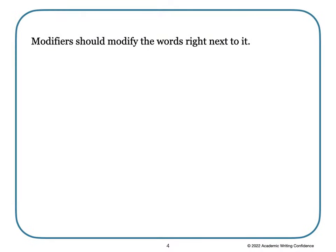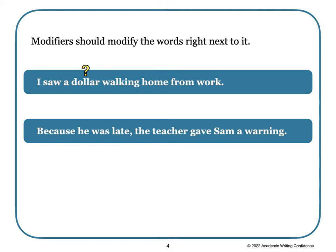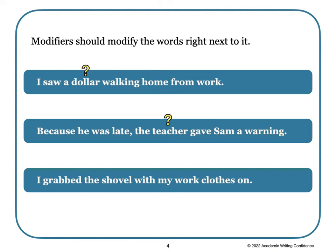So modifiers should modify the words right next to them. Consider: 'I saw a dollar walking home from work' — was the dollar walking home from work? 'Because he was late, the teacher gave Sam a warning' — was the teacher late or was Sam late? 'I grabbed the shovel with my work clothes on' — did the shovel have my work clothes on, or did I? You can see that some sentences could be confusing and should be written in a clearer way.